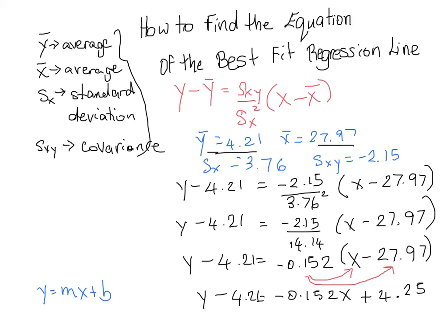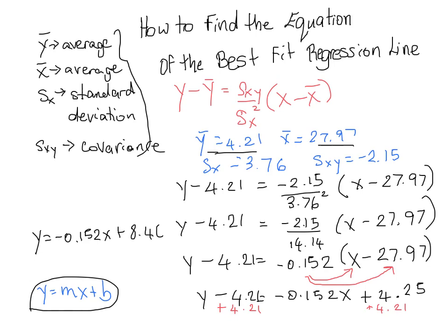We're almost there. Remember, we want the form y equals mx plus b, but we have 4.21 on the left side. Adding 4.21 to both sides, we get y equals negative 0.152x plus 4.25 plus 4.21, which gives us y equals negative 0.152x plus 8.46. That is the equation of the best fit regression line.